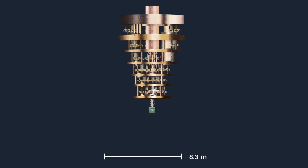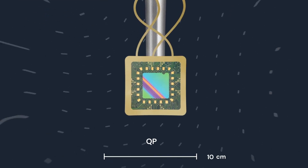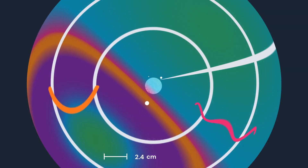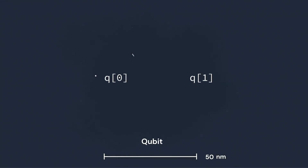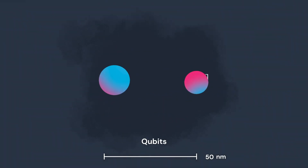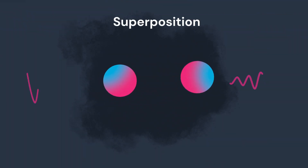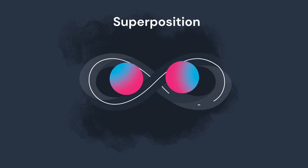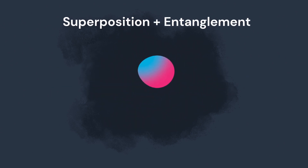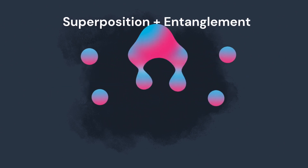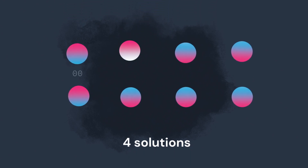Entering quantum processor unit. Programming qubit 0 and 1. Manipulating qubits into superposition. Manipulating qubits into entanglement. Four possible solutions to algorithm.